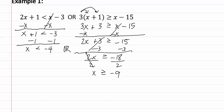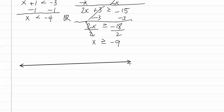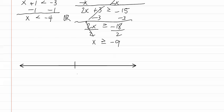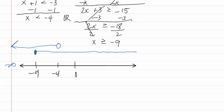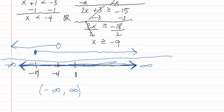Let's graph each of these. We put zero, negative four, and negative nine on our number line. For x less than negative four, we draw an open dot going towards negative infinity. For x greater than or equal to negative nine, we have a closed dot at negative nine going in the positive direction. Remember, with an 'or' we write down all that is shown on the graph. As you can see, the graph covers from negative infinity all the way to positive infinity, so we write the answer as negative infinity to positive infinity, or all real solutions.